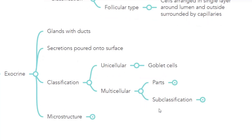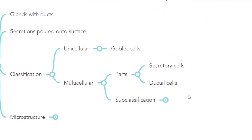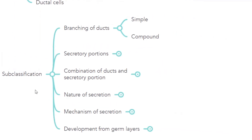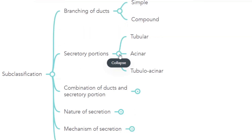The multicellular gland has two parts. The lower or basal part is the secretory part which has the secretory cells, and the superficial part is the duct which is surrounded by ductal cells. The multicellular gland is subclassified based on numerous factors. Based on the branching of ducts, it is classified into simple or compound gland — simple has only one duct, compound has numerous branching ducts. Based on the secretory portion arrangement, it is classified into tubular, acinar, and tubuloacinar.